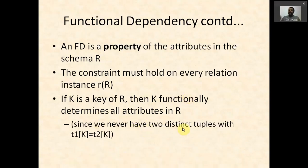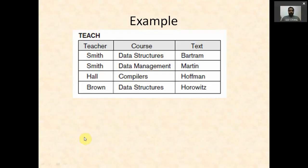This is because we cannot have two distinct tuples with T1(K) equal to T2(K) — that is the definition of a key. We will see one example with a teach relation. The teach table has three attributes: teacher, course, and text. From this table alone, we need to examine whether we can determine functional dependencies between these attributes.